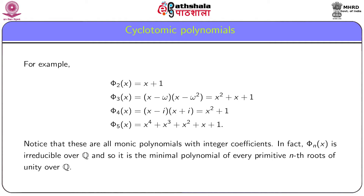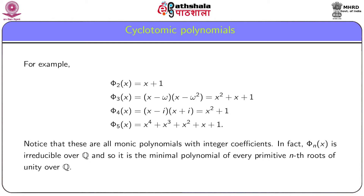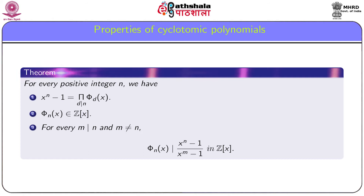There is a fantastic similarity between cyclotomic polynomials φ_p(x) where p is prime. φ_2(x) = x + 1, φ_3(x) = x² + x + 1, and φ_5(x) = x⁴ + x³ + x² + x + 1. Notice that these are all monic polynomials with integer coefficients. We now prove that every cyclotomic polynomial is monic with integer coefficients, establishing three properties of cyclotomic polynomials.